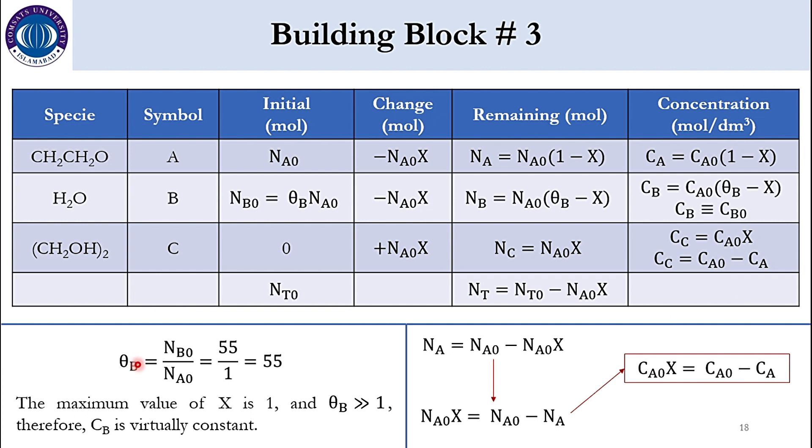And θB is calculated as NB0 over NA0. The initial concentration of A is 1 while that of B is 55. So the answer of θB is 55. Which is too high. And again showing that B is virtually constant in the system. So this is our building block number 3 for the system.